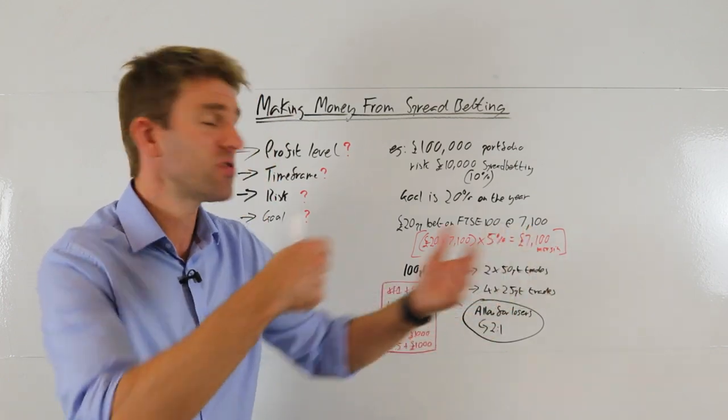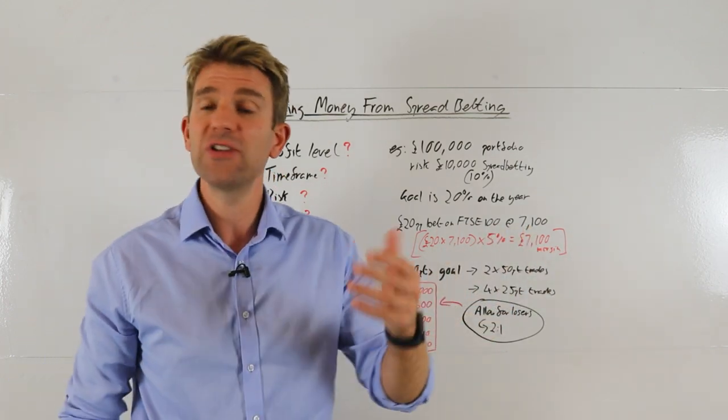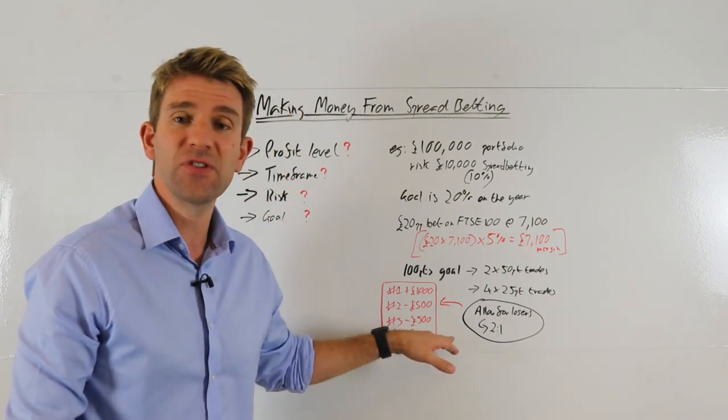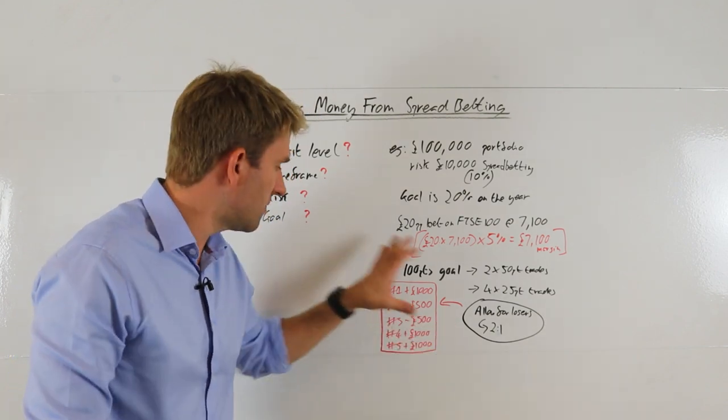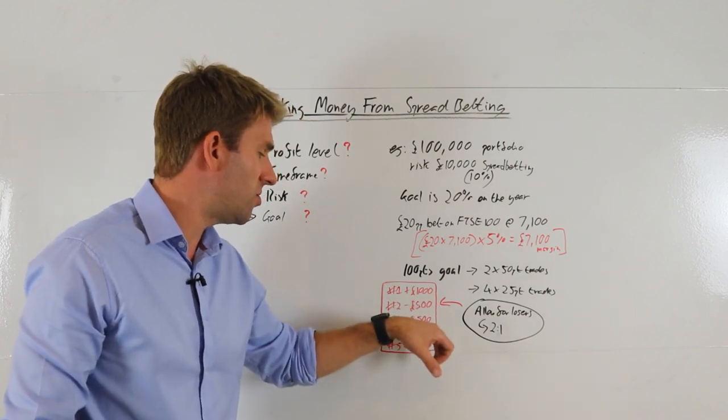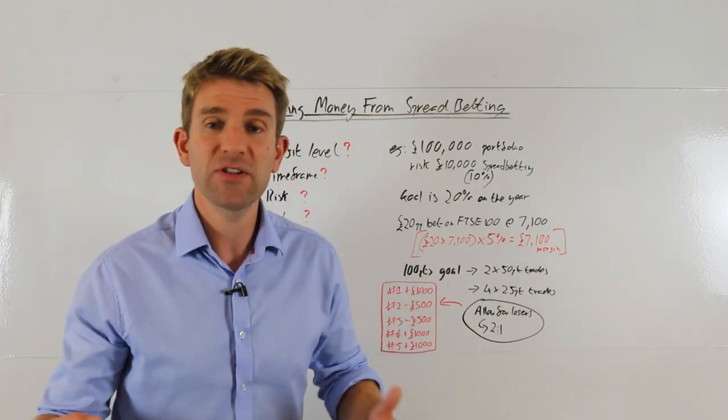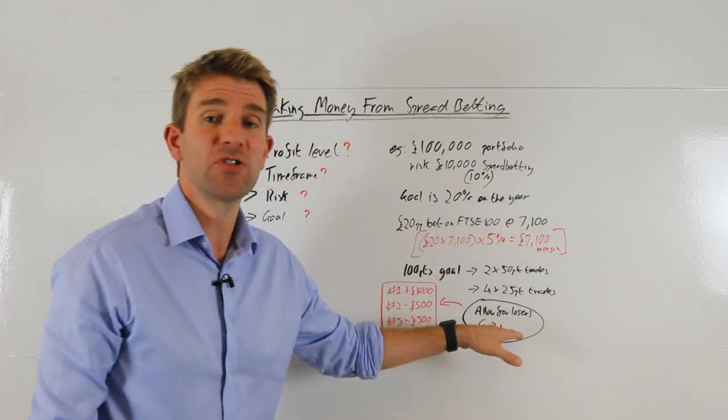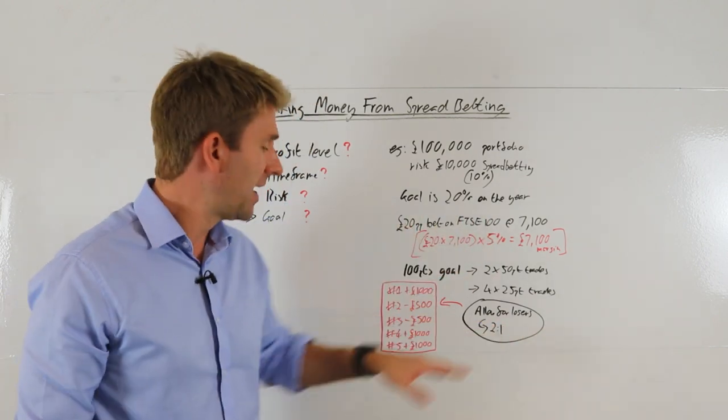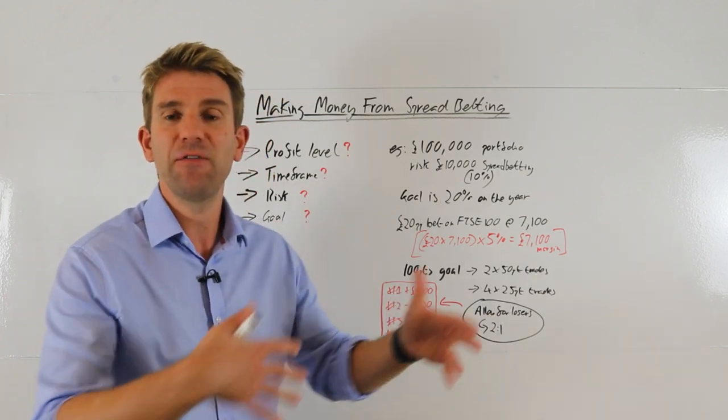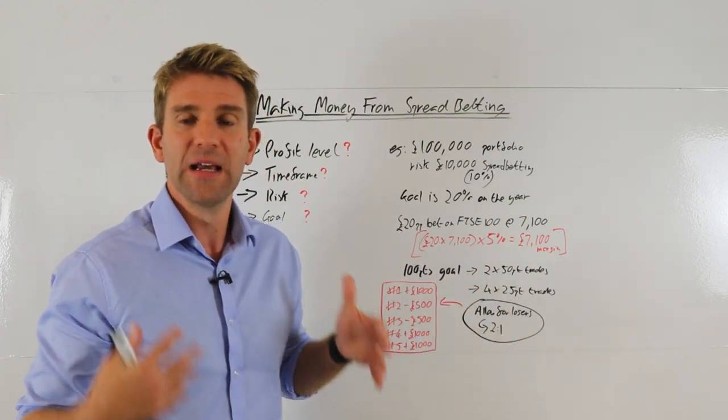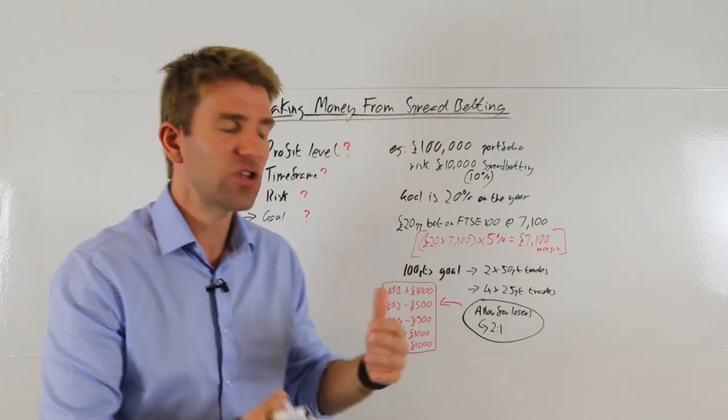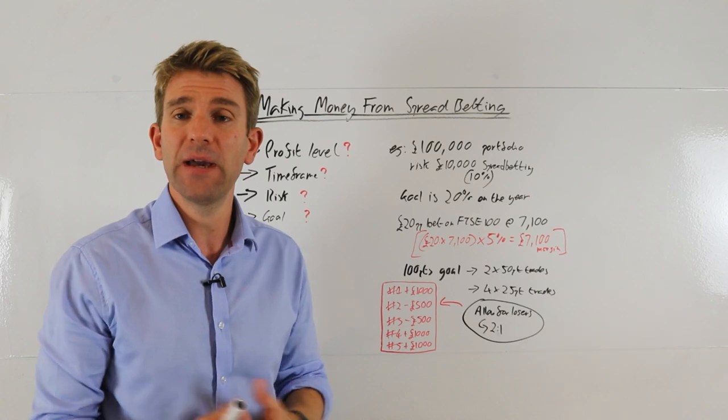So what would happen if you got half right, half wrong? Trade number one, let's say you've got 20 pound a point, looking at 50 point target. The trade works in your favor. You get 50 points. You close the trade. You've banked a thousand pounds. You're halfway there. Unfortunately, the next two trades go against you because you're using a two to one risk reward ratio. You lose 500 pounds. You lose another 500 pounds. You've had one winner and two losers. Not a problem. You're not in loss at the moment. The next two trades go great for you. You make 50 points in each. So over the year, you've had five trades, three winners, two losers.